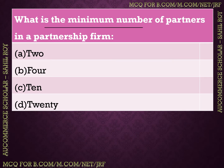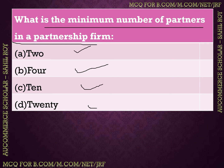The next question: what is the minimum number of partners in a partnership firm? Options: (A) 2, (B) 4, (C) 10, (D) 20. The minimum number of partners in a partnership firm is 2. A business with fewer than 2 persons is called sole proprietorship. If a single person works alone, they are a sole trader; if at least 2 join, a partnership begins.